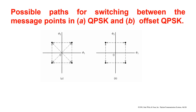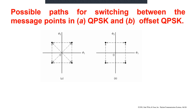To overcome that drawback, we go for offset QPSK. Offset means delay. In offset QPSK, the bit stream which is responsible for generating the quadrature component is delayed by half the symbol interval with respect to the bit stream responsible for generating the in-phase component. By doing so, in OQPSK, the phase transition is only confined to plus or minus 90 degrees, meaning both in-phase and quadrature components will not change simultaneously — only one will change.